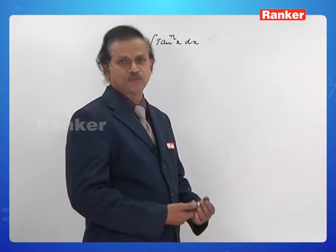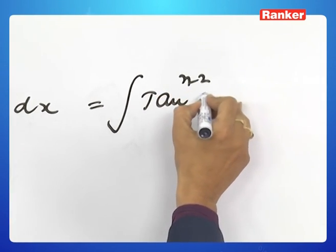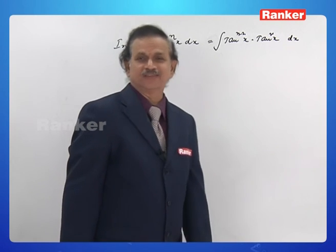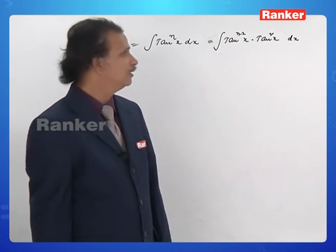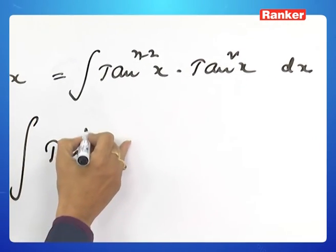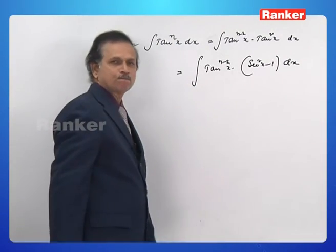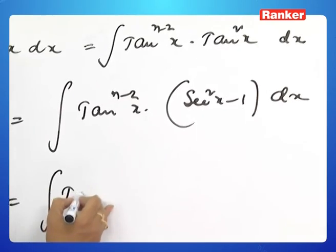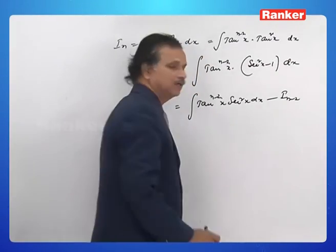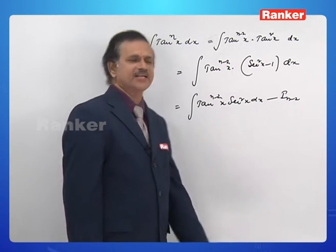Integral of tanⁿx must be split as tan^(n-2)x into tan²x. This is somehow easier compared to sin^n x and cos^n x. We write tan²x as sec²x minus 1. Splitting into two parts gives: integral of tan^(n-2)x·sec²x dx, minus I_{n-2}. This is valid because tan^(n-2)x·1 is tan^(n-2)x, and its integral is just I_{n-2}.